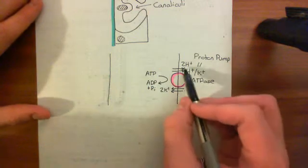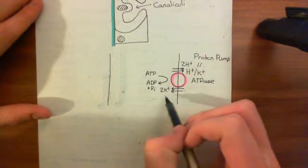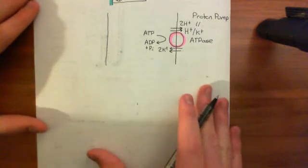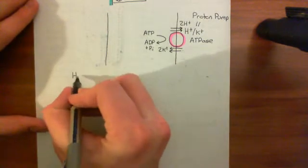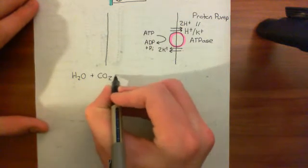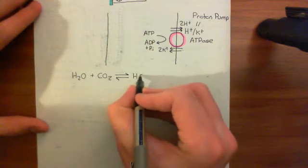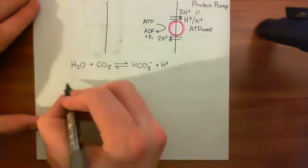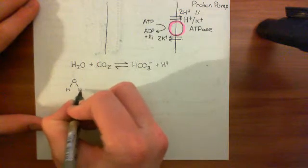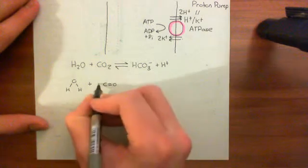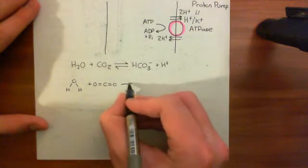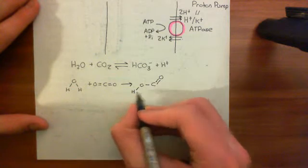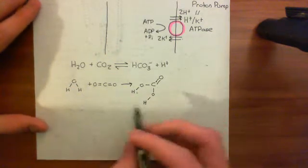So what's going to happen? The proton concentration within the cytoplasm of the cell is going to go down because we're continuously chucking protons out. Now there is an equilibrium within the cell between water and carbon dioxide on one side, and bicarbonate anions and protons on the other side. Water and carbon dioxide can assemble into an intermediate — carbonic acid — which we've seen already. Carbonic acid is a carbon with a double bond to an oxygen and then two alcohol groups coming off it. So basically, if we cut one of these covalent bonds and go through the reaction, we get carbonic acid.